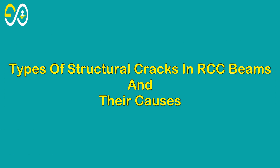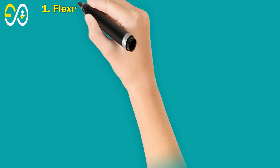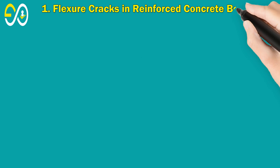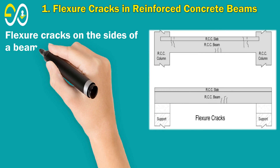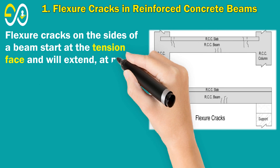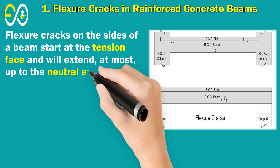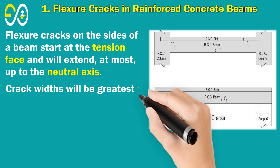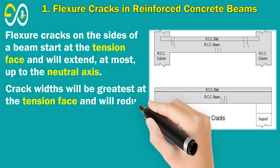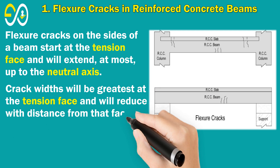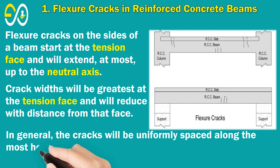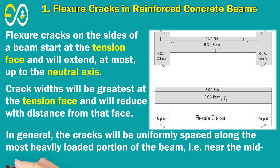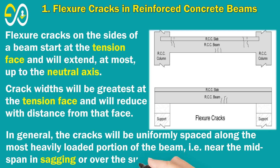Types of Structural Cracks in RCC Beams and Their Causes. 1. Flexure Cracks in Reinforced Concrete Beams. Flexure cracks on the sides of a beam start at the tension face and will extend, at most, up to the neutral axis. Crack widths will be greatest at the tension face and will reduce with distance from that face. In general, the cracks will be uniformly spaced along the most heavily loaded portion of the beam, for example near the mid-span in sagging or over the supports in hogging.